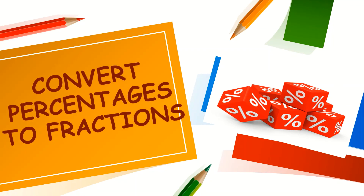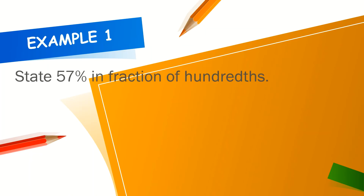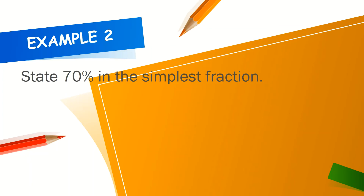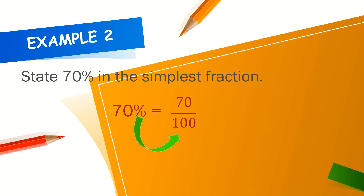Next, let's see how to convert percentages to fractions. Remember, 57% is equal to 57 hundredths. Example: 70 over 100 — this fraction can be simplified.